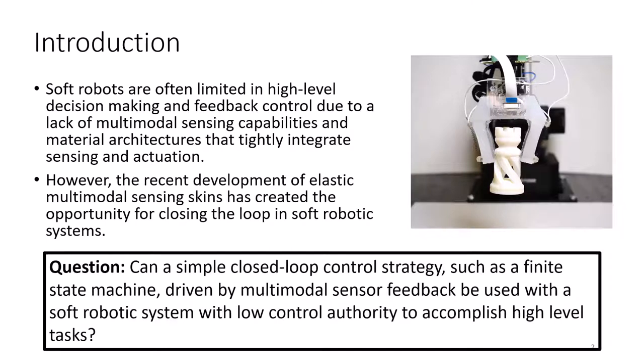The question we are investigating in this work is: can a simple closed-loop control strategy, such as a finite state machine, driven by multimodal sensor feedback, be used with a soft robotic system with low control authority to accomplish high-level tasks?